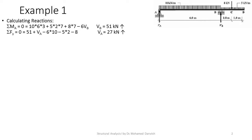Sigma FY equals zero: 51 plus VA minus 6 times 10, minus 5 times 2, minus 8 equals zero. So VA equals 27 kN.